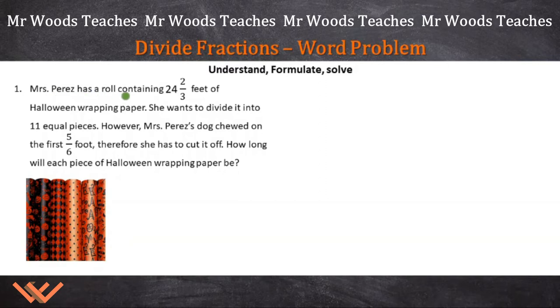Mrs. Perez has a roll containing 24 and 2/3 feet of Halloween wrapping paper. She wants to divide it into 11 equal pieces. However, Mrs. Perez's dog chewed on the first 5/6 foot, therefore she has to cut it off. How long will each piece of Halloween wrapping paper be?